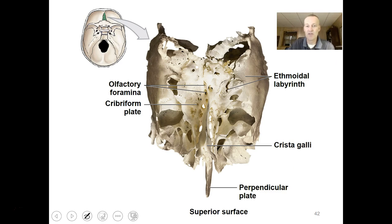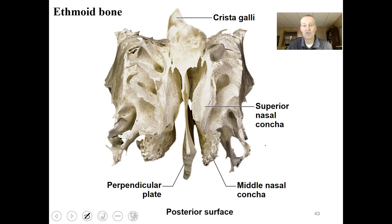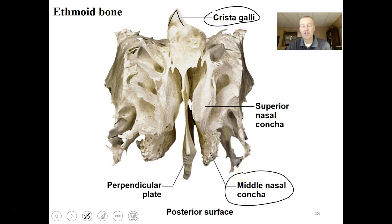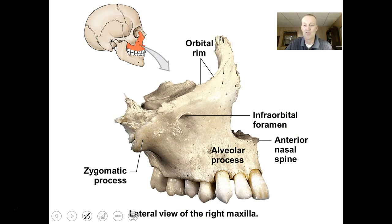This is your ethmoid bone — a very complex bone. The parts you would need to know are the cribriform plate and the crista galli. This is a bone you'll need to get in hand and look at because it's too complex to fully appreciate in pictures. A posterior view shows you the crista galli as a little crest. You can see the middle nasal concha, which is lined with mucous membrane making up part of your nasal cavity, and the perpendicular plate makes up your nasal septum.